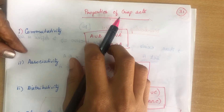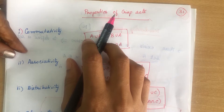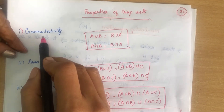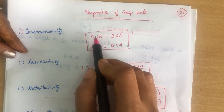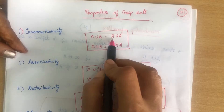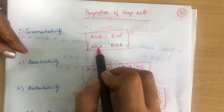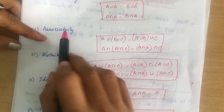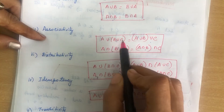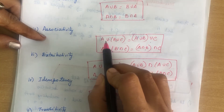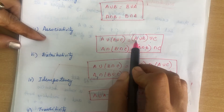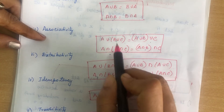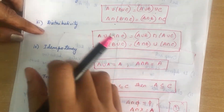Next are the properties of crisp set or classical set. Properties play an important role in obtaining solutions. There are 10 properties. First is commutative property: A ∪ B = B ∪ A, and A ∩ B = B ∩ A. Second is associativity: A ∪ (B ∪ C) = (A ∪ B) ∪ C, and likewise for intersection.